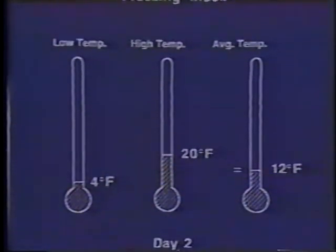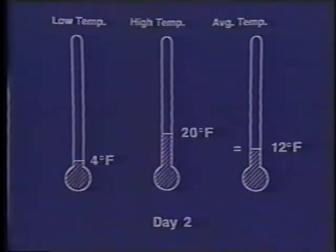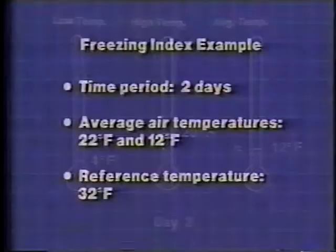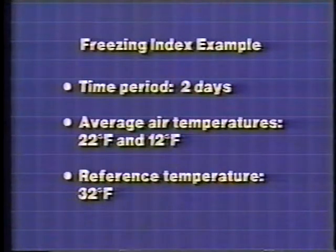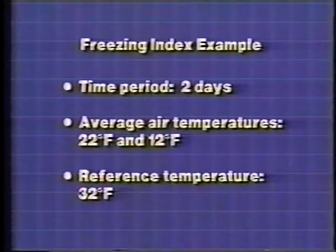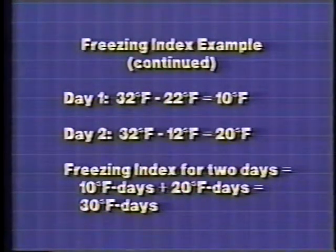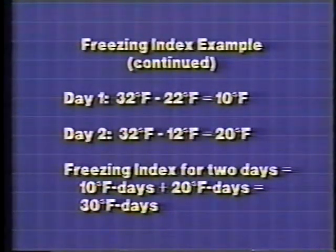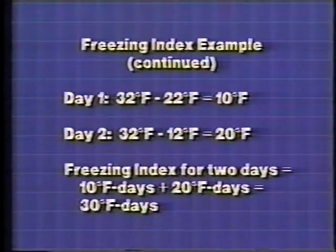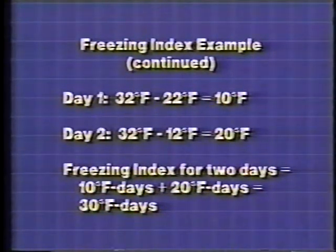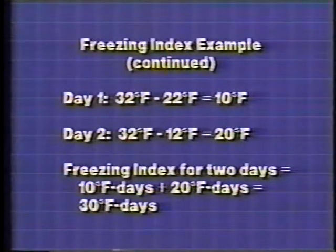For the second day, a low of 4 degrees and a high of 20 degrees gives an average of 12 degrees Fahrenheit. In our two-day example, the average air temperatures are 22 and 12 degrees, and the reference is 32 degrees Fahrenheit. The reference minus day one's average: 32 minus 22 equals 10 degree Fahrenheit days. The reference minus day two's average: 32 minus 12 equals 20 degree Fahrenheit days. The freezing index equals the sum: 10 plus 20 equals 30 degree Fahrenheit days. The complete freezing index for the winter equals the addition of these daily values over the entire winter.